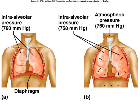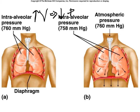From physics, there is an inverse relationship between pressure and volume. When there is an increase in volume, pressure goes down; vice versa, when volume decreases, pressure increases. This is the principle that allows air to move in and out of the lungs.